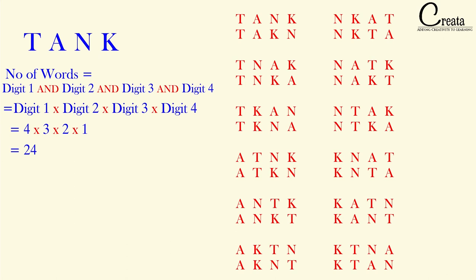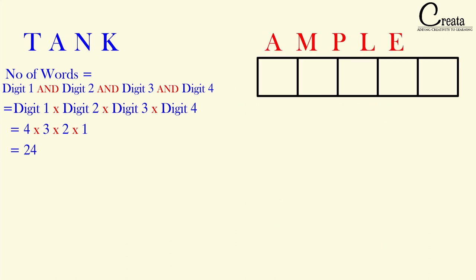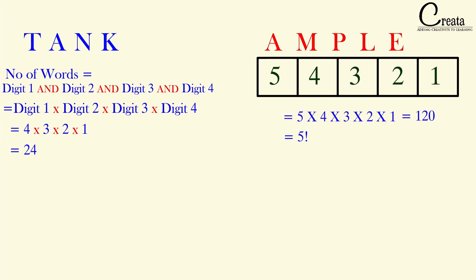Similarly, you can take a five-letter word or three-letter word and calculate the answer. If we take any five-letter word, the answer will be 5 × 4 × 3 × 2 × 1. This is basically 5 factorial, which we will see in our next lecture — what factorial is and how to solve questions related to it.